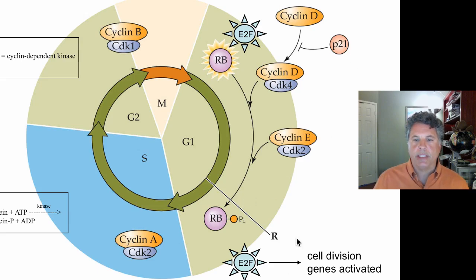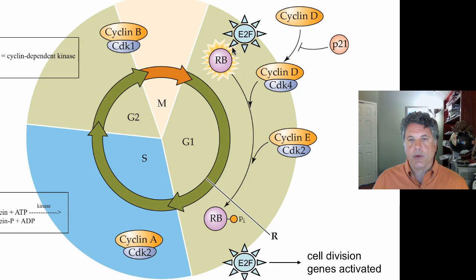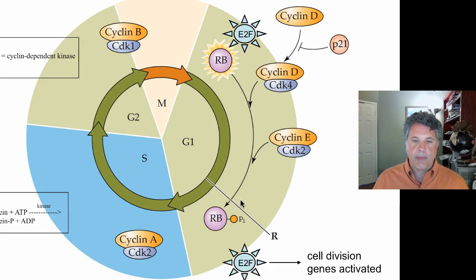The cell will stop dividing at the restriction point in G1. This is a nice regulatory mechanism to stop the cell from further dividing. Cells that are destined to become proliferatively quiescent — that is, to stop proliferation — will keep their retinoblastoma protein active and keep it from being phosphorylated. Because phosphorylation inactivates retinoblastoma and causes the release of E2F, which activates progression through the cell cycle.